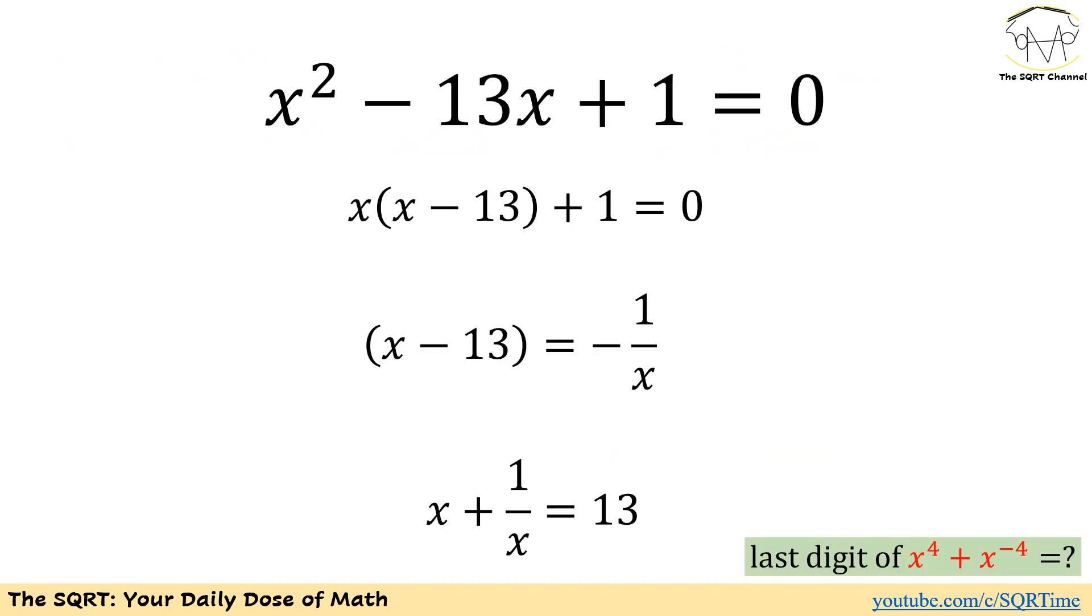To solve this problem let's start with the equation that we got. We have x squared minus 13x plus 1 equals to 0. We are going to factor out x and then we will see x times x minus 13 plus 1 equals to 0. If we rearrange then x minus 13 is going to be negative 1 over x or x plus 1 over x is going to be 13.